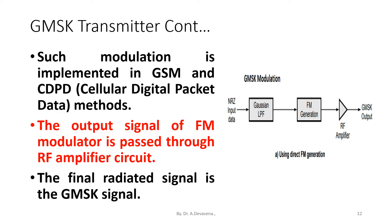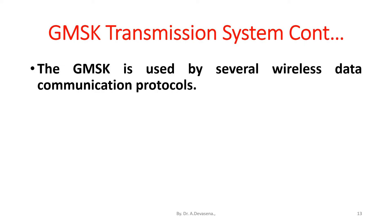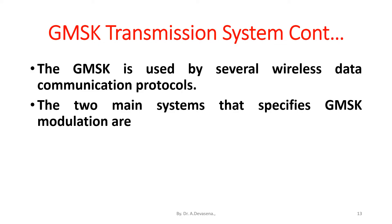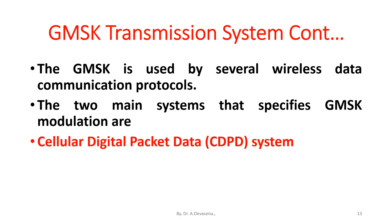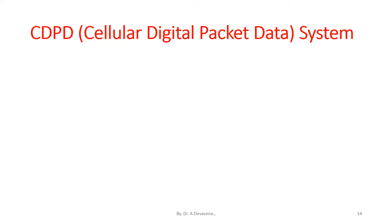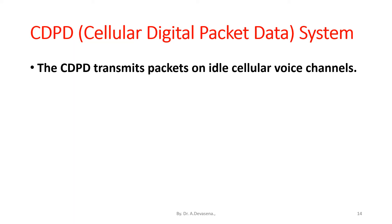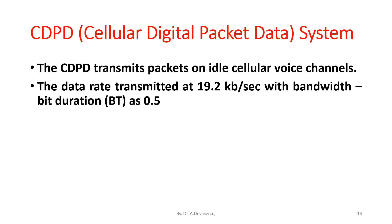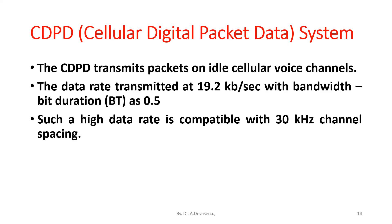The GMSK is used by several wireless data communication protocols. The two main systems that specify GMSK modulation are Cellular Digital Packet Data (CDPD) and the Mobitex system. The CDPD transmits packets on idle cellular voice channels at a data rate of 19.2 kilobits per second, with a bandwidth-bit duration product of 0.5. Such a high data rate is compatible with 30 kilohertz channel spacing.